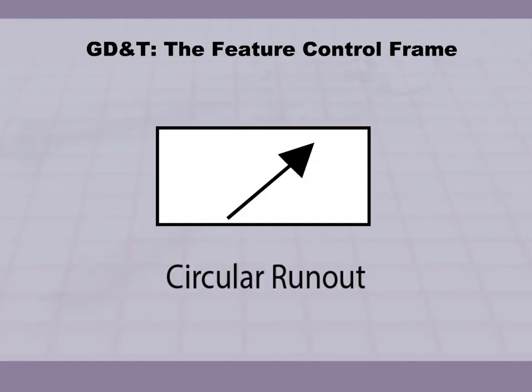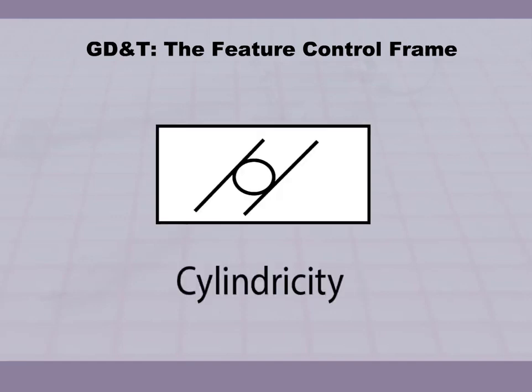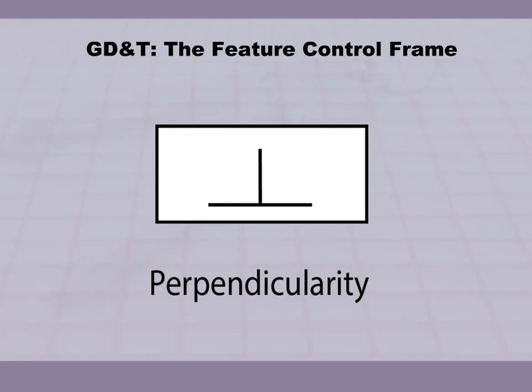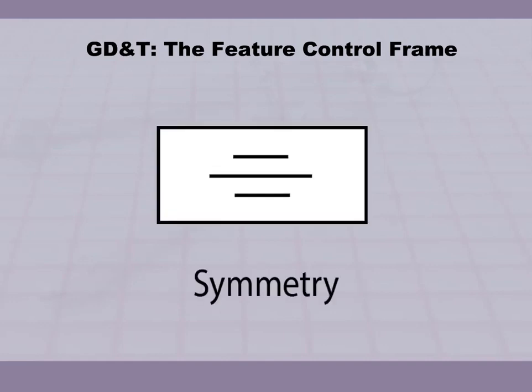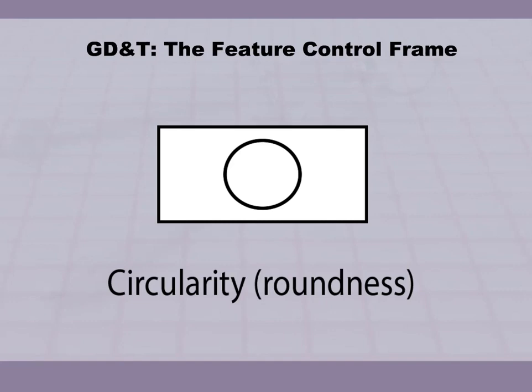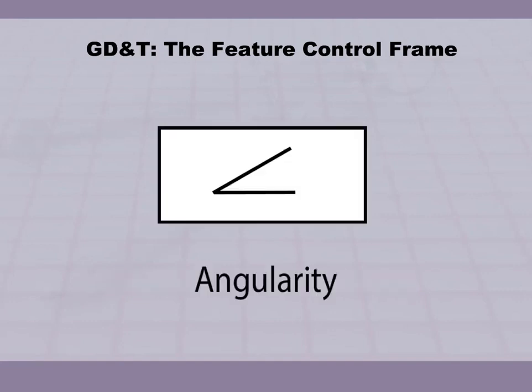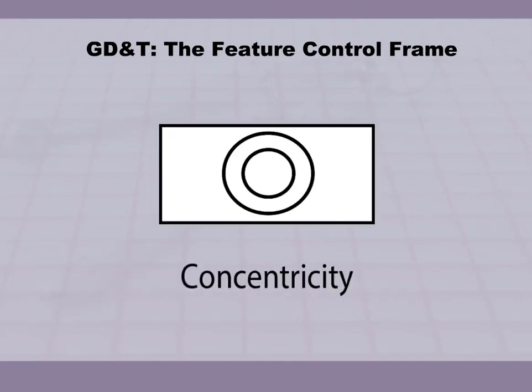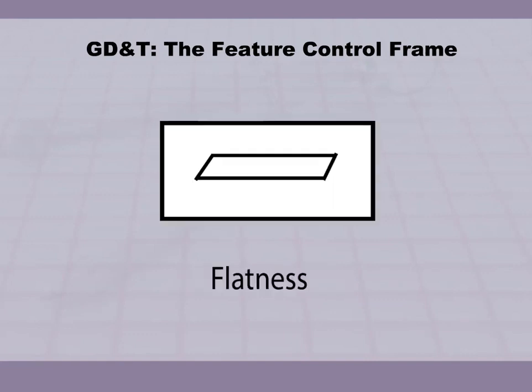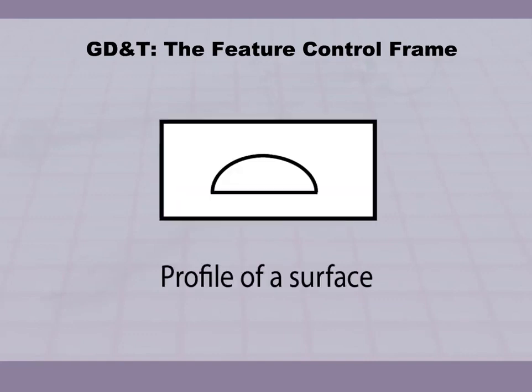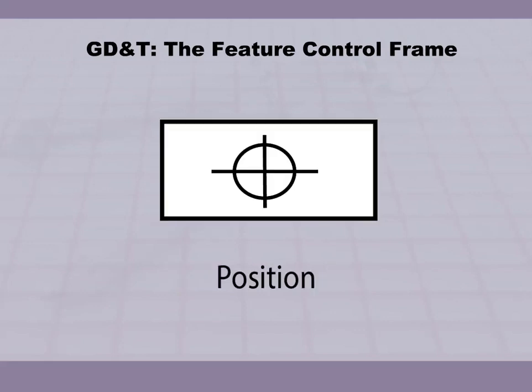Other geometric symbols include Circular Runout, Cylindricity, Perpendicularity, Symmetry, Circularity, Angularity, Concentricity, Flatness, Profile of a Surface, Position, and Total Runout.